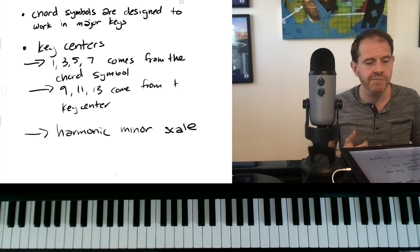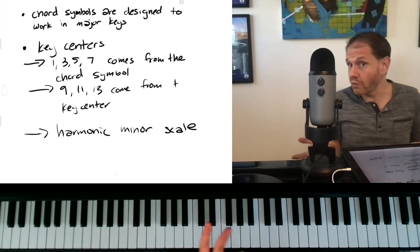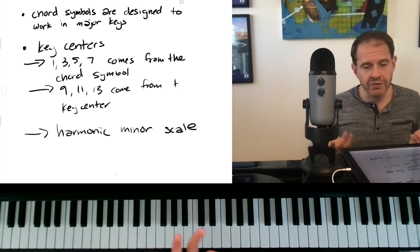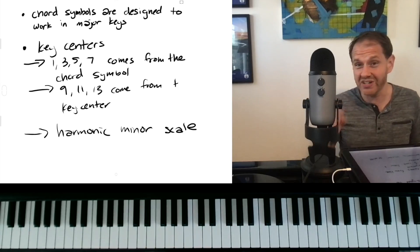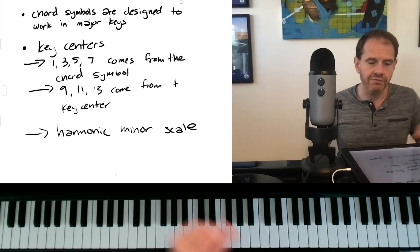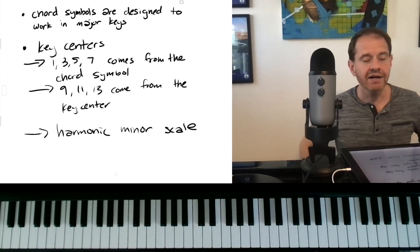So we need to always know what key center you're in. And there might be some moments where it's ambiguous and that's normal and then you can make kind of some different choices. But the 1-3-5-7 has kind of got to come from the chord symbol unless they just write a triad in which case you need to be smart. And then the 9th, 11th, and 13th can come from the key center. I don't know what happened to the rest of the word the, but now it's there. And when you're in a minor key, you want to really zero in on the harmonic minor scale.